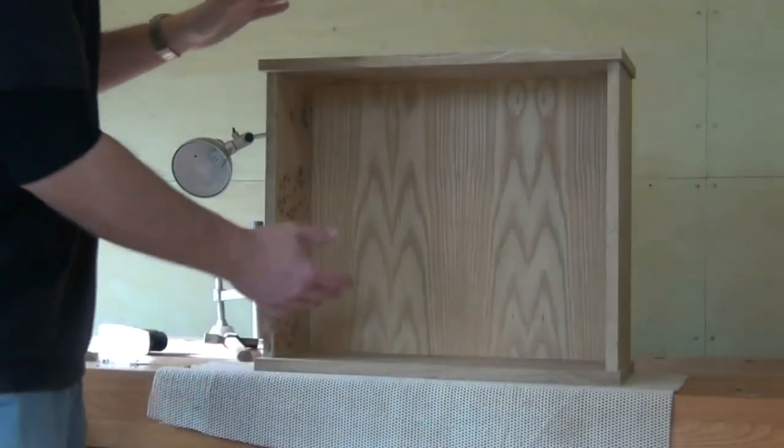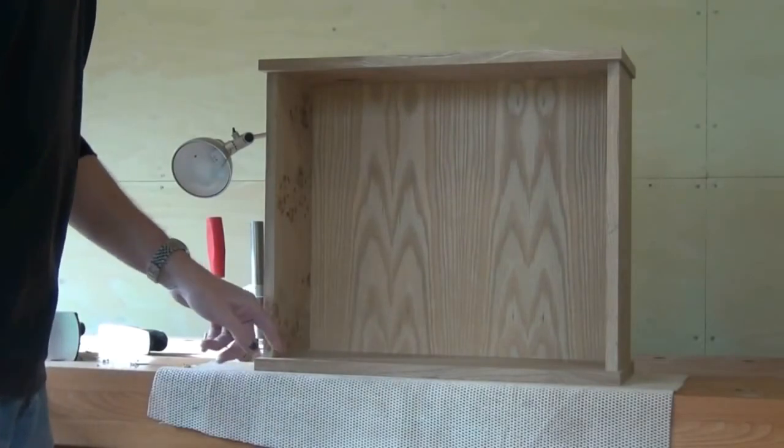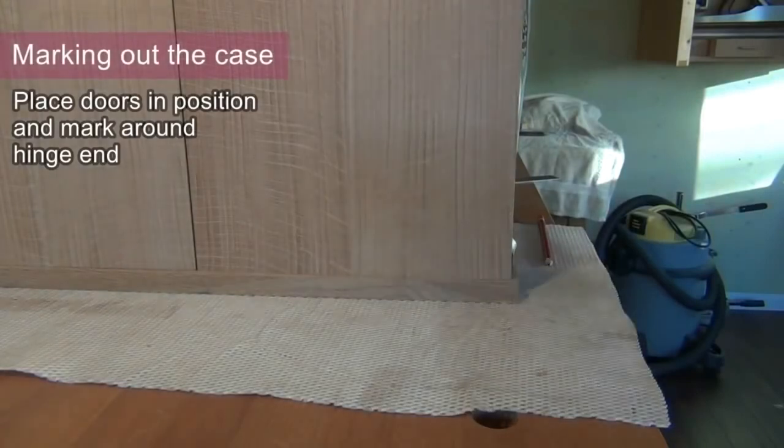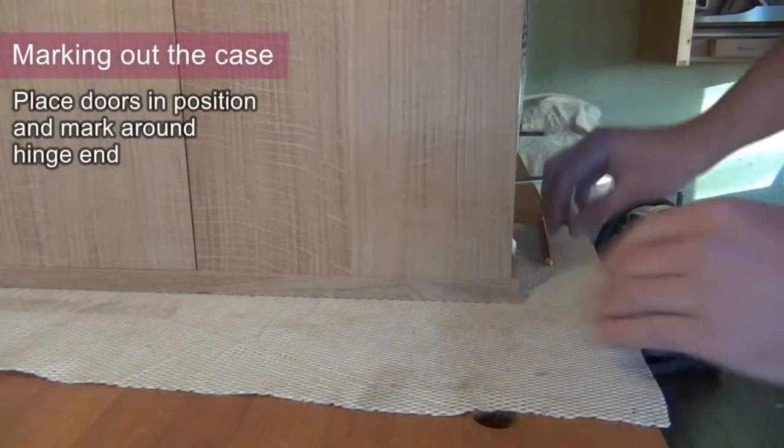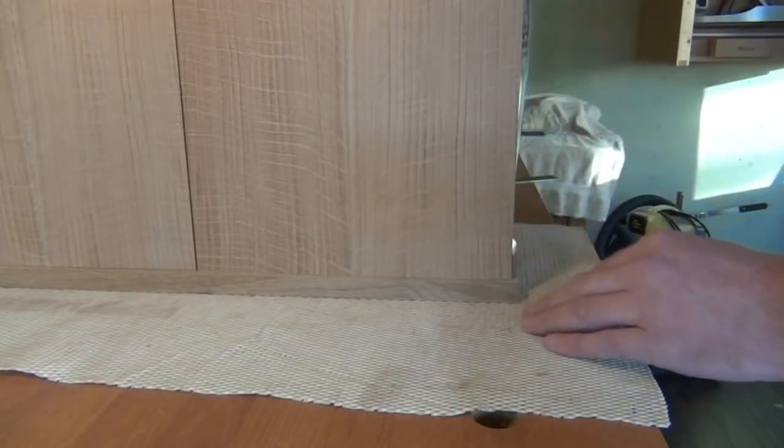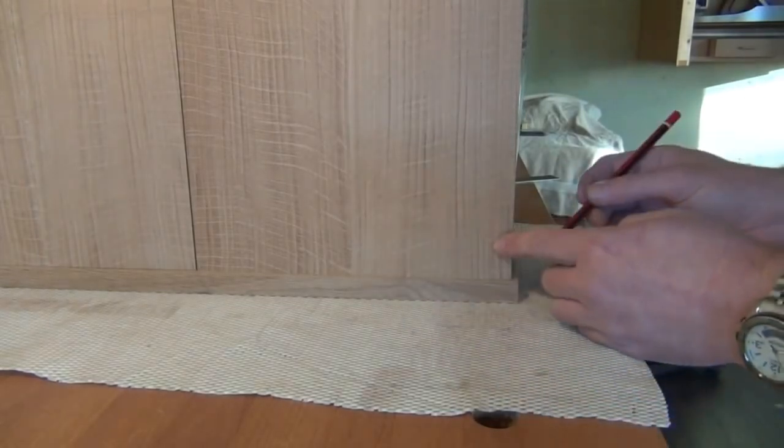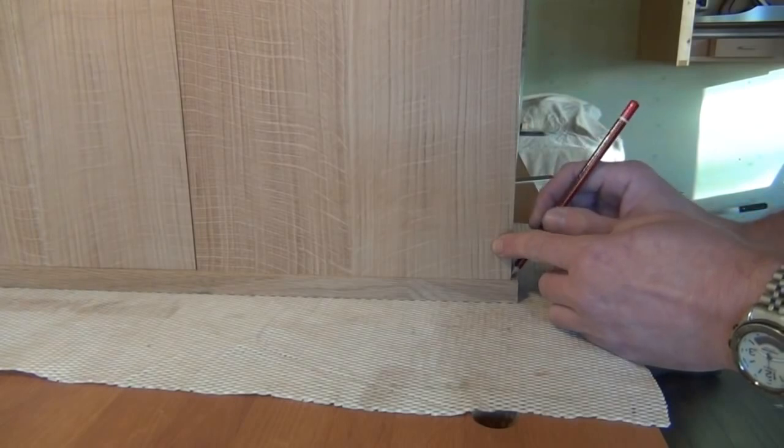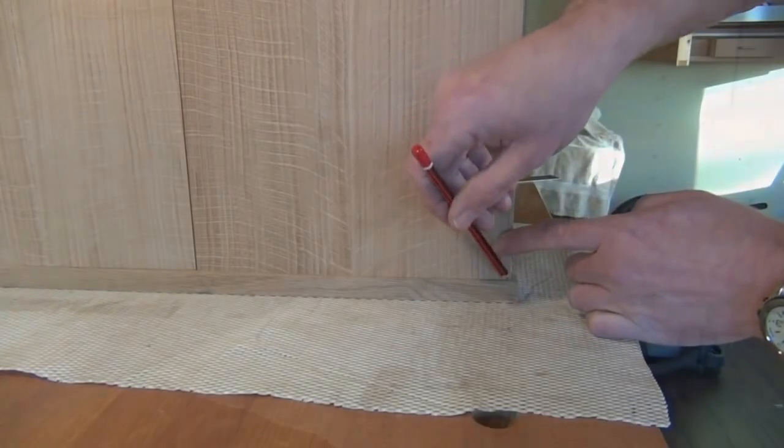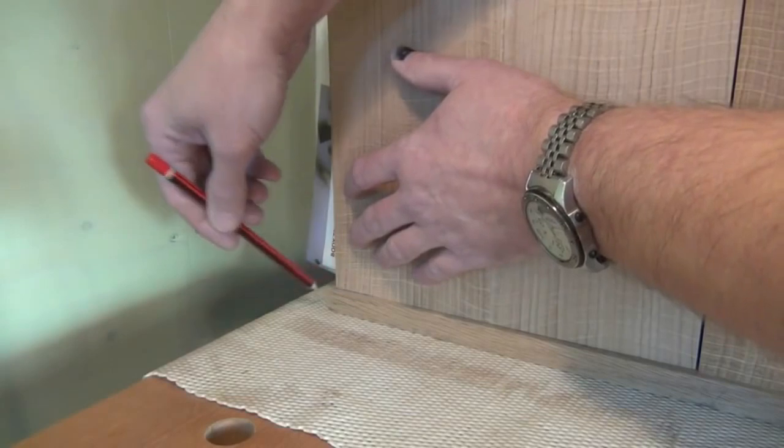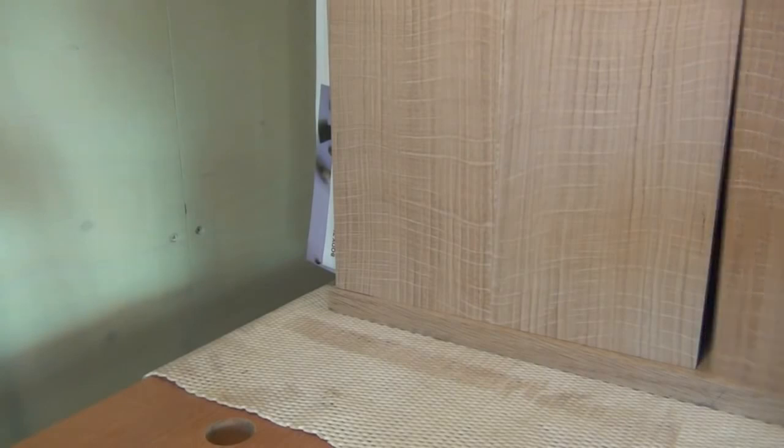So before we actually glue the cabinet together I think it's best if we mortise for the knife hinges. To mark out for the knife hinges I set my doors on the cabinet where they're going to go. I've got some spacing behind them here. And I've flushed up the edges with the cabinet. And I just mark lightly with a pencil the position of the door. And we do that both sides. And we also mark the inside of the door.